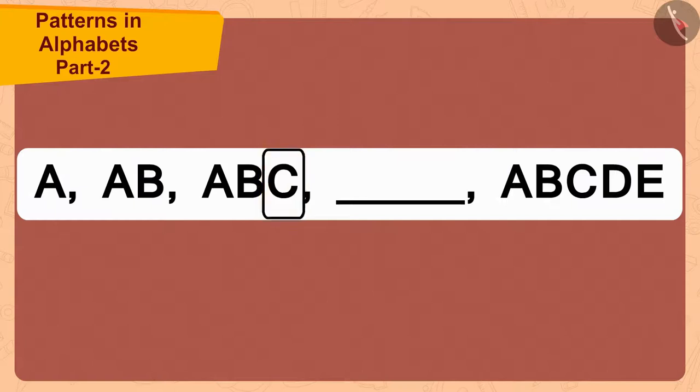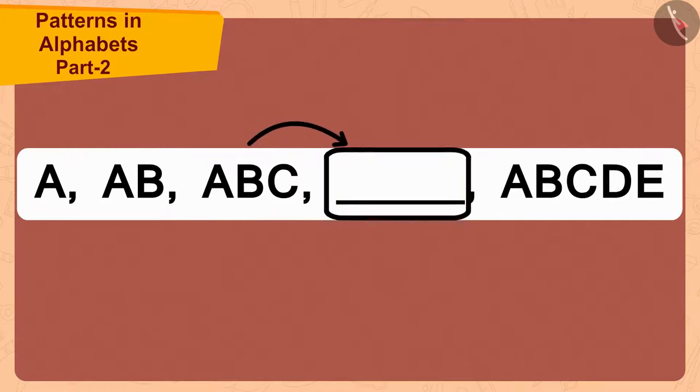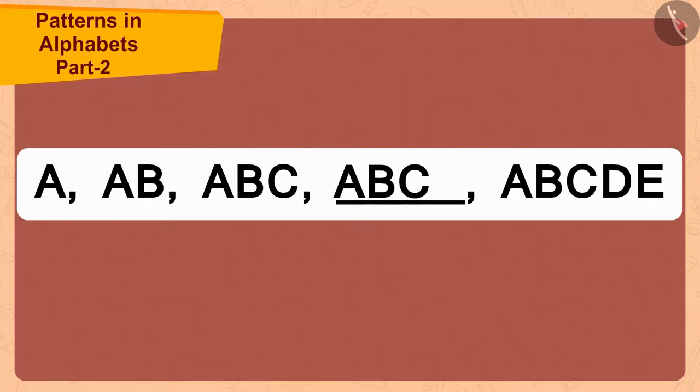So, now what will be the letters that come in the blank space? Repeating A, B, C will add the next letter D to it. In this way, the letters in the blank space will be A, B, C, D.